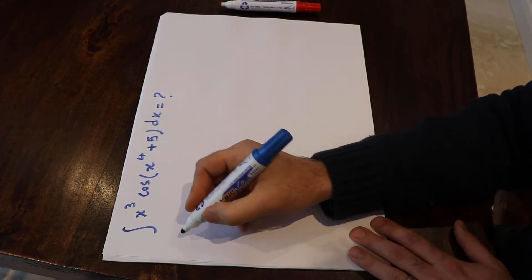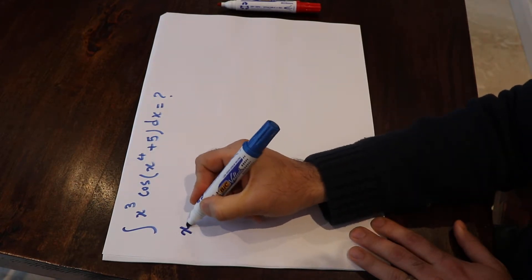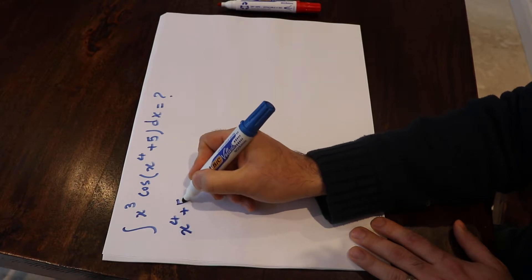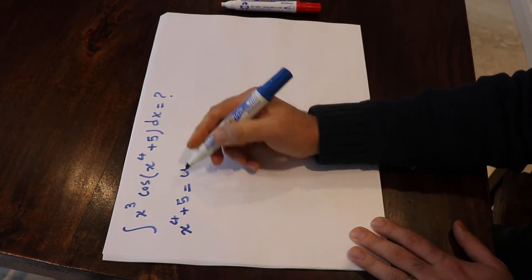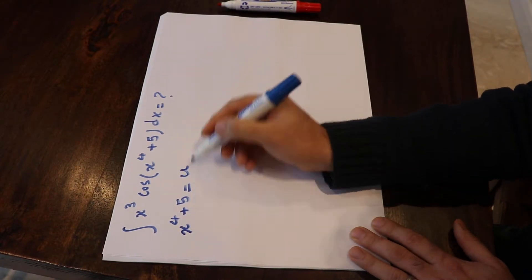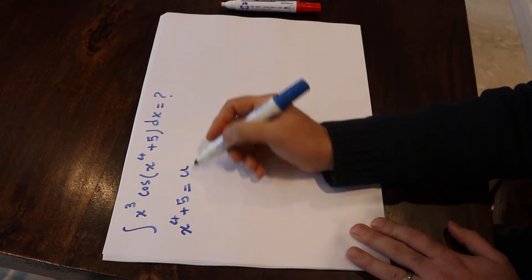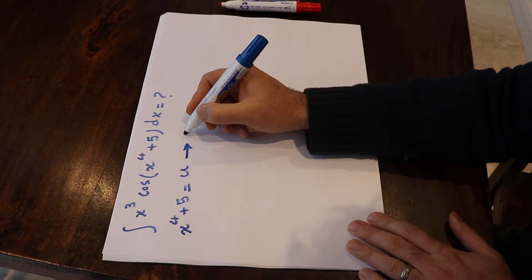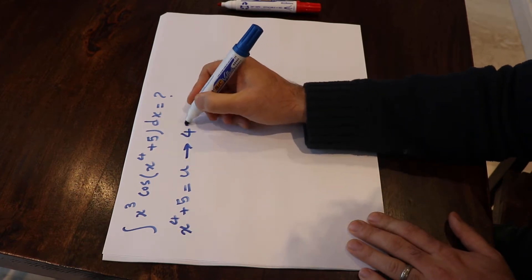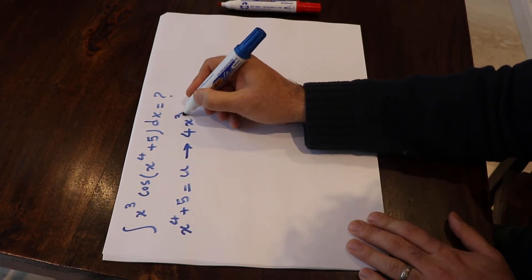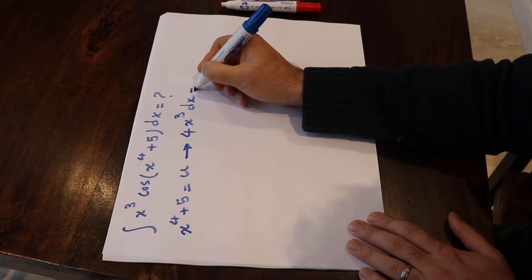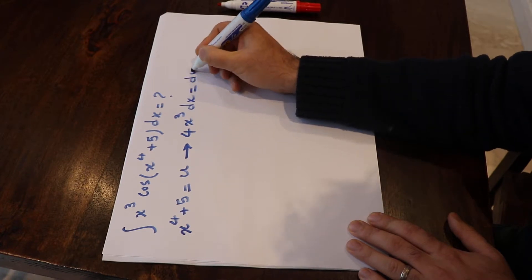If you substitute x⁴ plus 5 by the parameter u, you can take the derivative from each side of this equation. That will be 4x³ dx is equal to du.